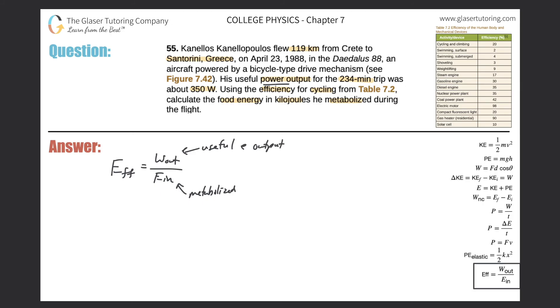Now they told us the useful power output was 350 watts, but they also gave us a time. So that's actually very good to know, because that means I can use this formula over here to find the work. Power is equal to work over time. So to find work, it's just simply power times time.